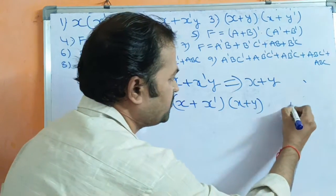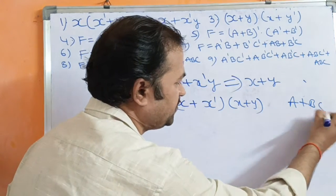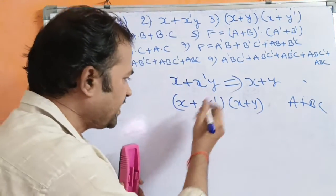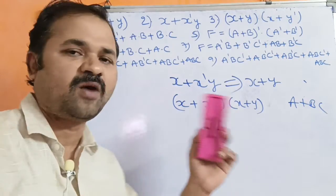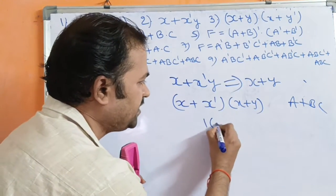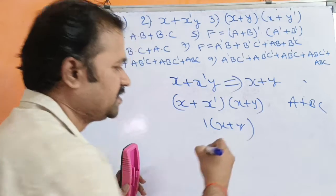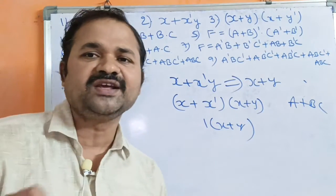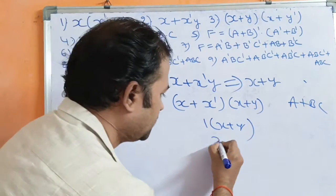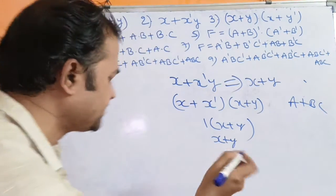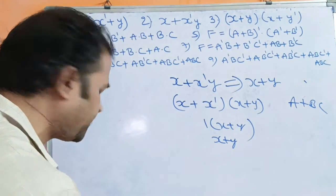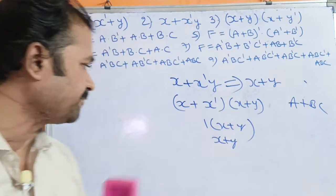Using distributive law, we get (X + X̄)(X + Y). The formula for X + X̄ is 1, so we have 1·(X+Y). Since 1 times anything equals that value, the solution is X + Y. The solution for the second problem is X + Y.